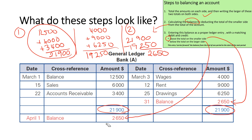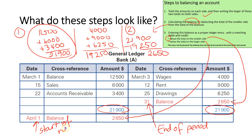The last thing you should look at is the dates. This date here is the end of the period, and this date here is the start of the next period. Be really careful with these dates because you can be penalised in a SAC or exam if you write incorrect dates.